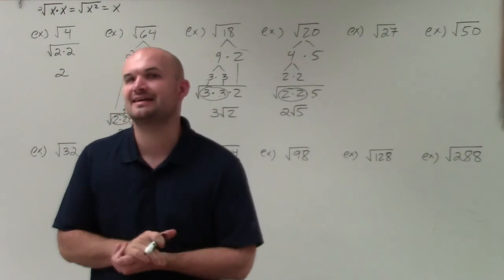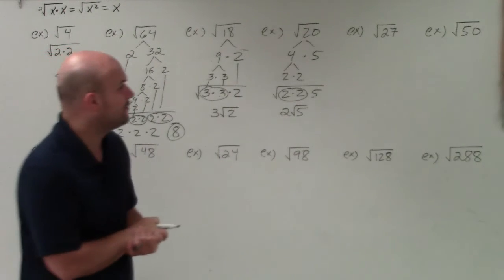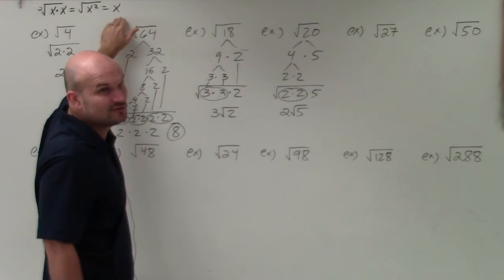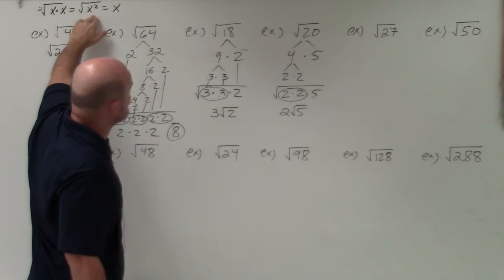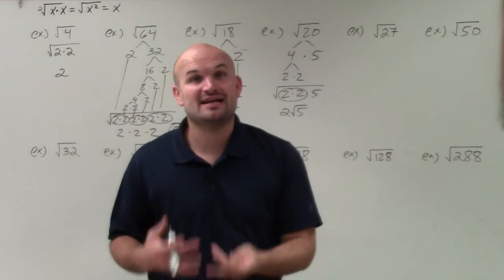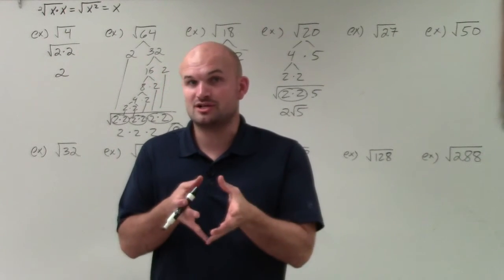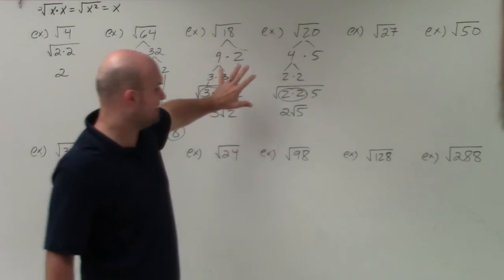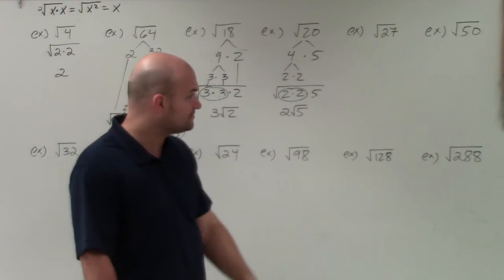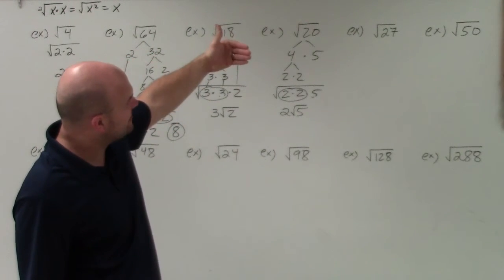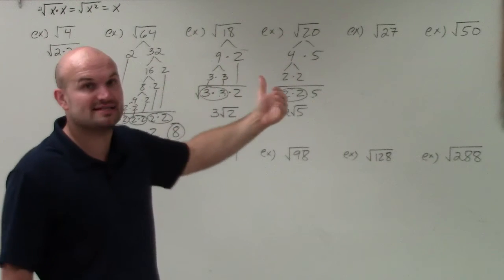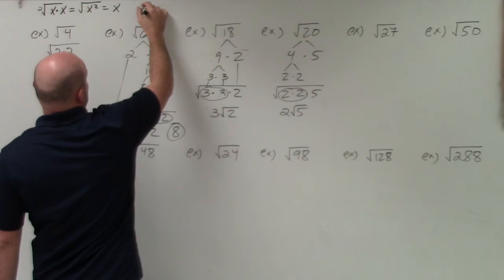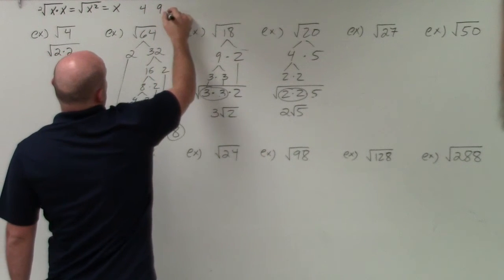Now let's get into some quicker ways to do this. One quicker method uses the identity element: the square root of a value squared is just equal to that value — so √(x²) = x. That means if I can rewrite my radical with a squared term, I can take the square root of that value. Rather than always using prime factorization, I like to try to see if I can rewrite the number as a perfect square times something else. Can I find a square number that divides into it?